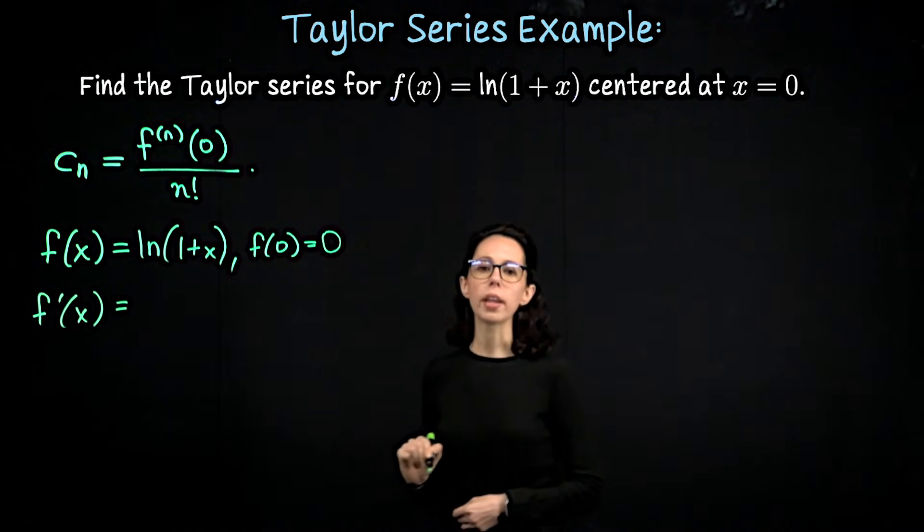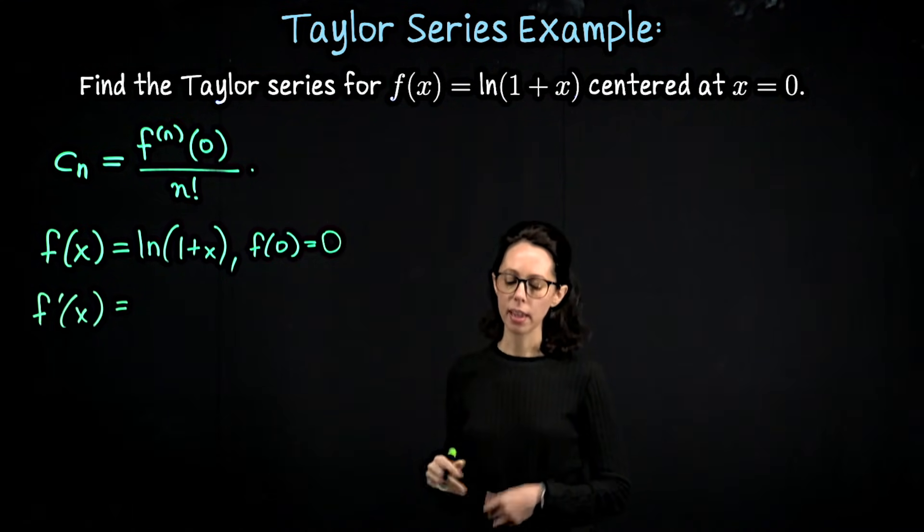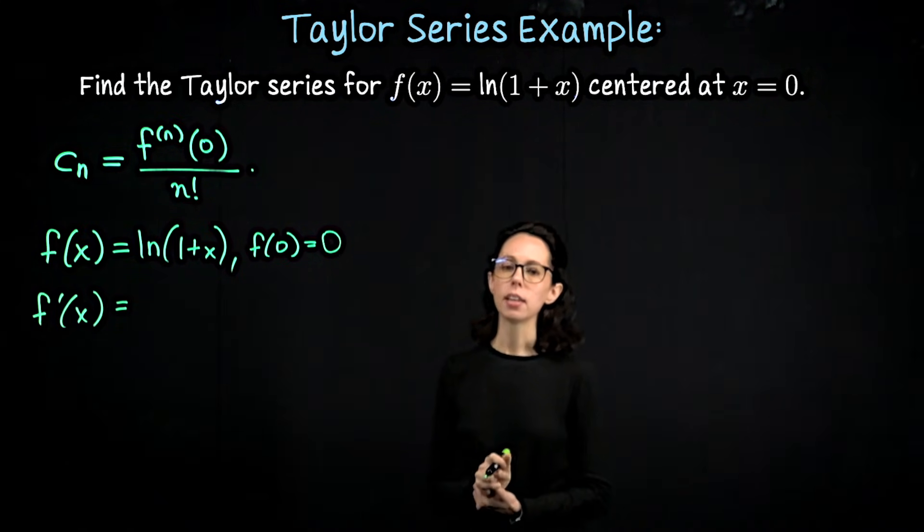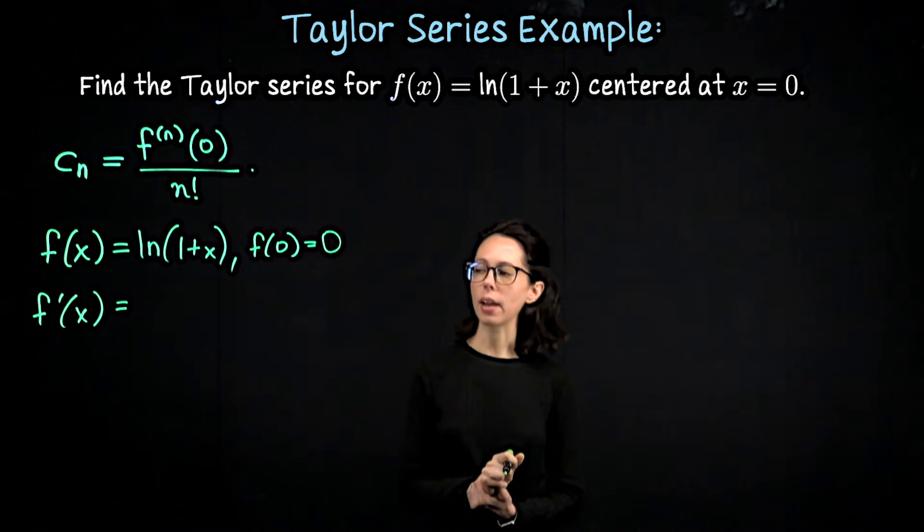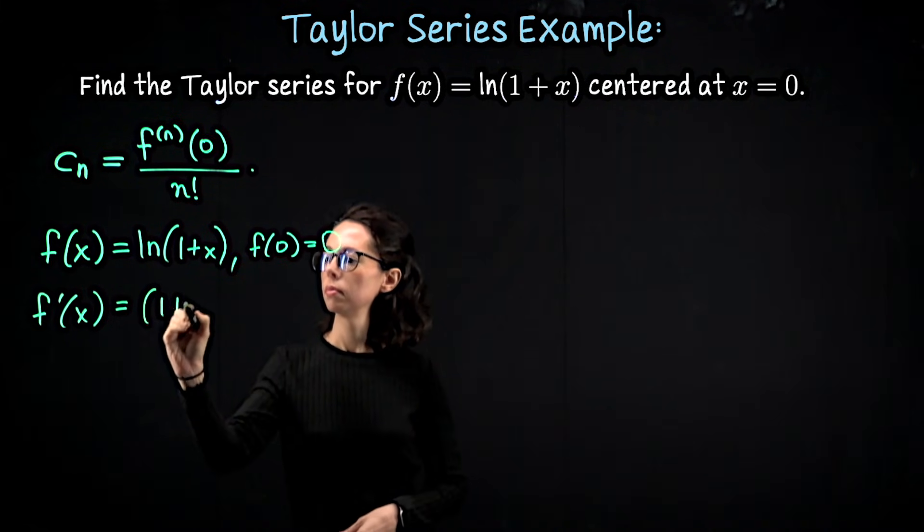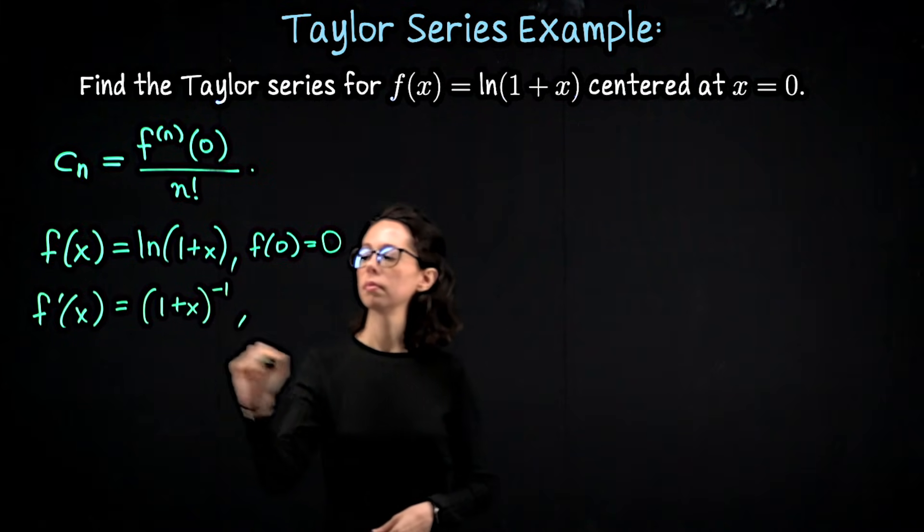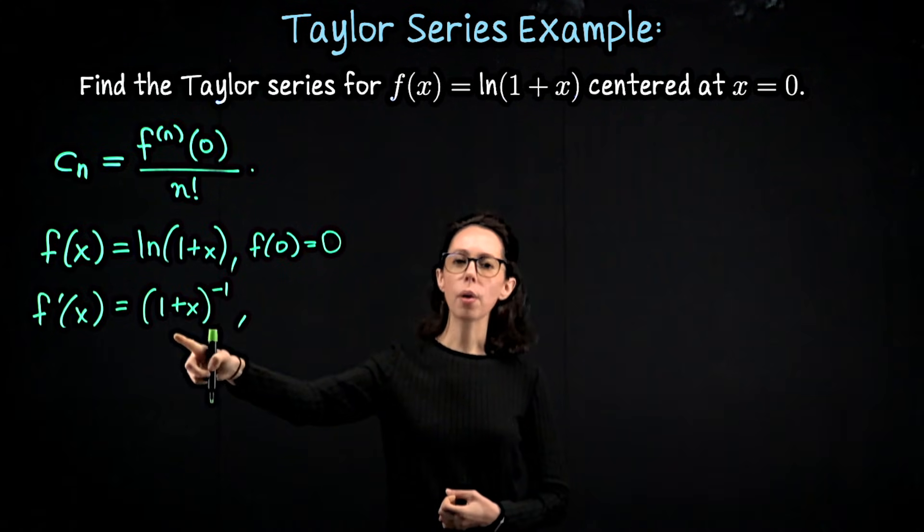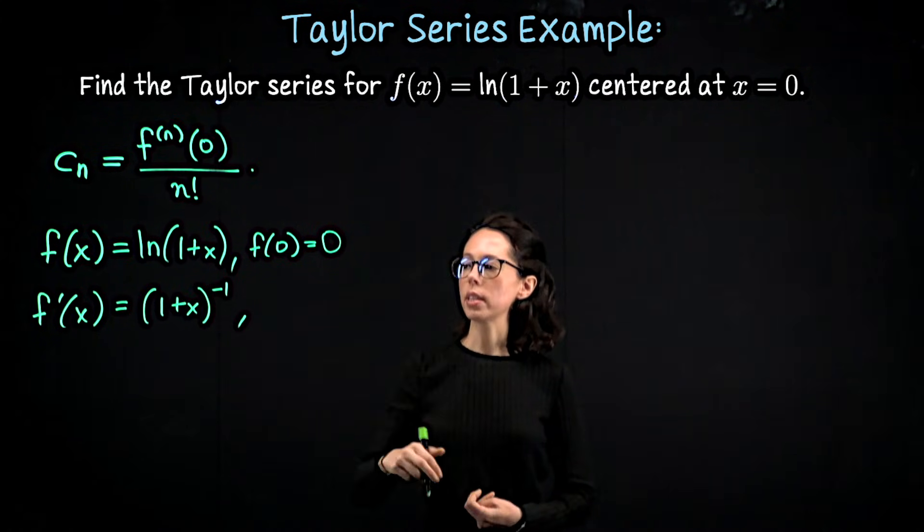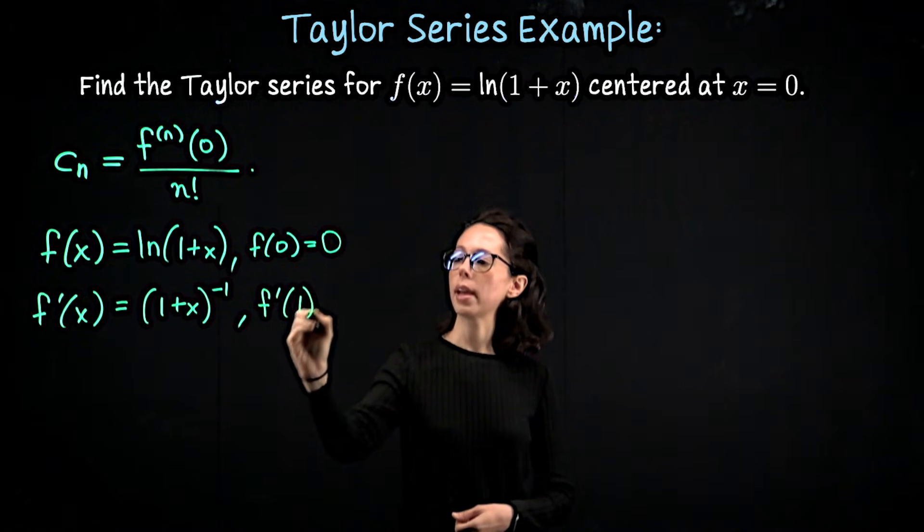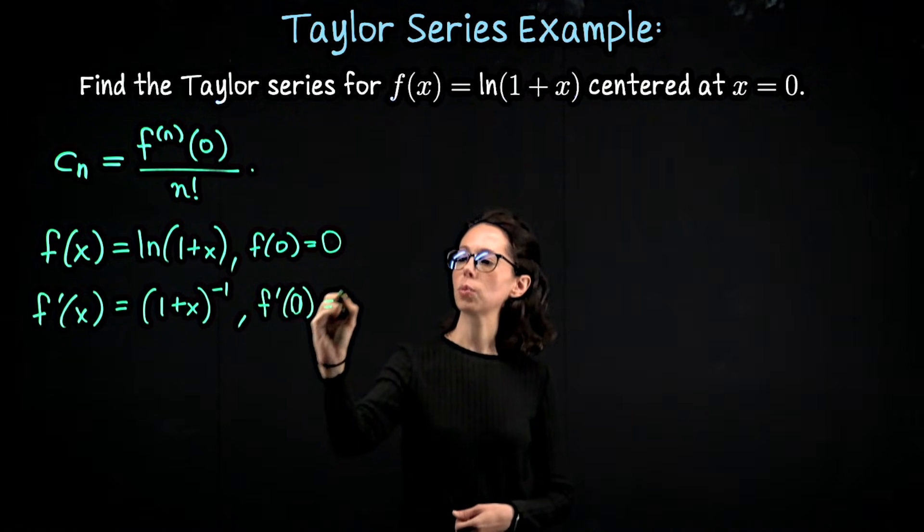Take the first derivative. It's going to be 1 over 1 plus x. And that's a fine thing to write down, but what will happen is actually I think it's a little easier to spot the future pattern if I write this as (1 + x) to the negative 1. So that's 1 over 1 plus x. Let's plug in x equals 0. 1 plus 0 is going to give us 1, 1 to the negative 1 is 1. So the first derivative of f evaluated at 0 is 1.